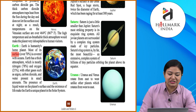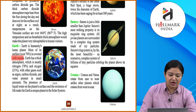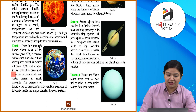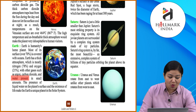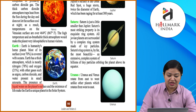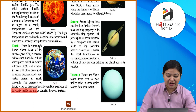Earth is humanity's home planet. More than 70 percent of its surface is covered with oceans. Earth has a thick atmosphere consisting mostly of nitrogen (78 percent) and oxygen (21 percent), with other gases such as argon, carbon dioxide, and water vapor present in small amounts. The presence of liquid water on the surface and the existence of life make Earth a unique planet in the solar system.